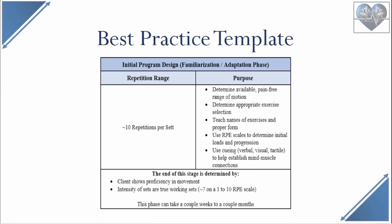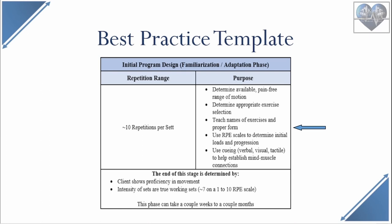This slide gives a little more detail about the initial familiarization phase. You begin at about 10 reps per set, and then use this phase to determine the available pain-free range of motion, determine the appropriate exercises, teach names of exercises and proper form, use rate of perceived effort scales to determine both initial loads and safe rate of progression, and use verbal, visual, and tactile cueing to help develop mind-muscle connections.